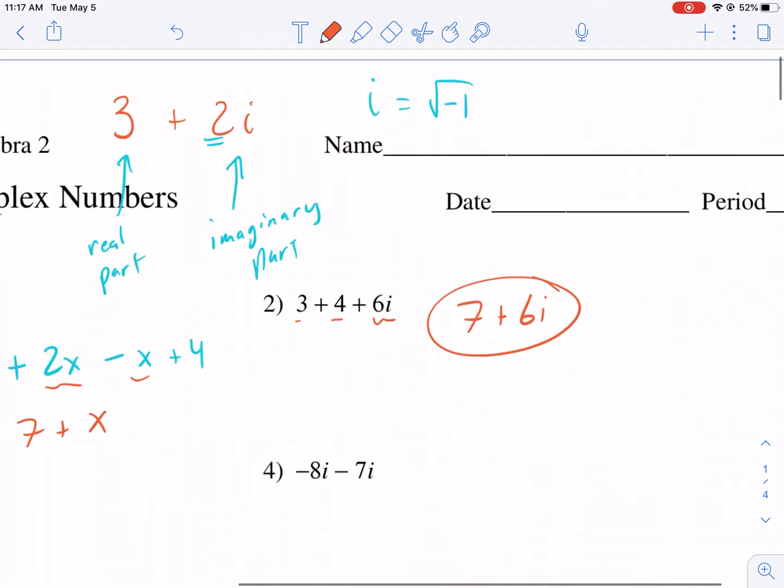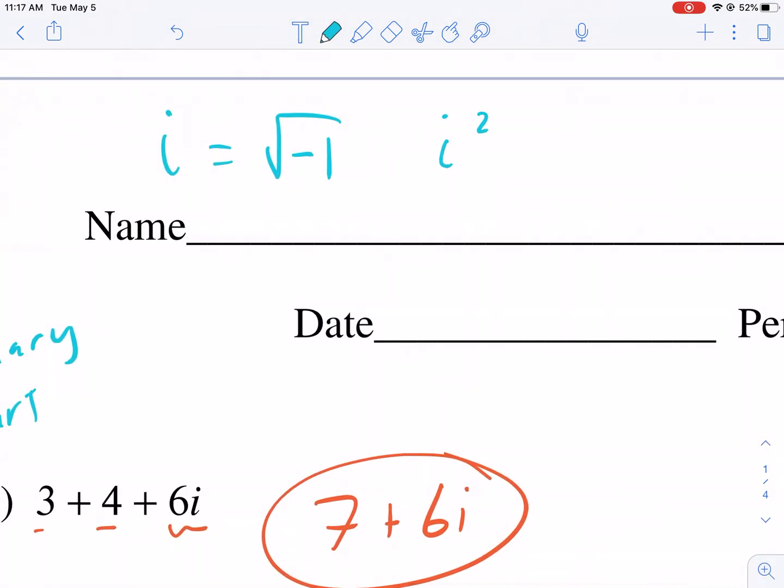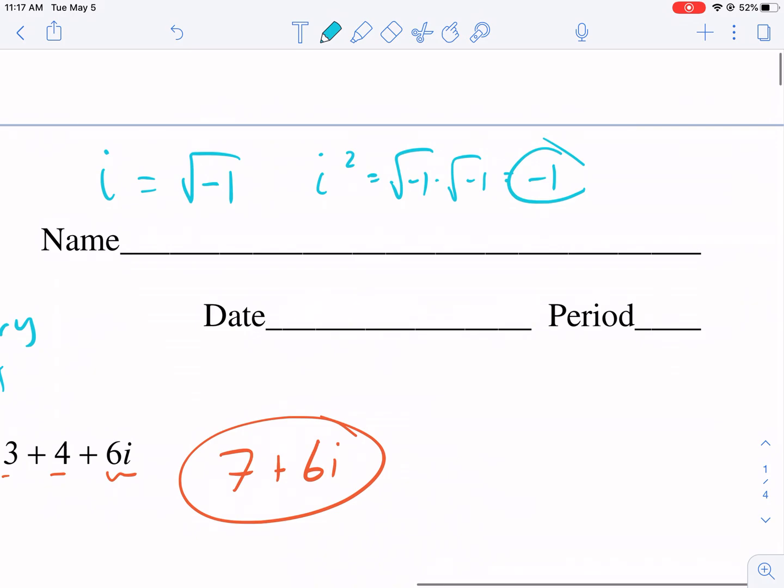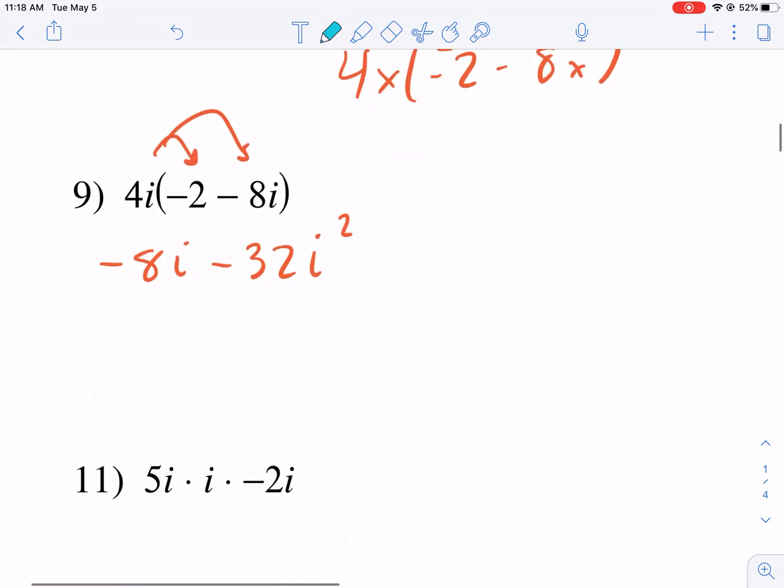So for those that are not familiar, i squared is the same thing as the square root of -1 times the square root of -1, which is just -1. This is a very critical component of complex numbers and allows us to do a lot of different operations. So anytime you have a higher power of i, you need to simplify it.